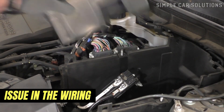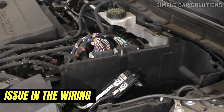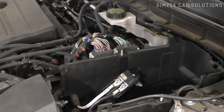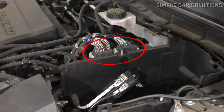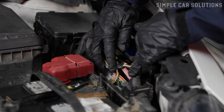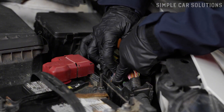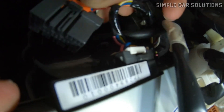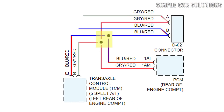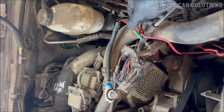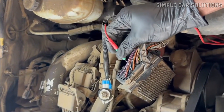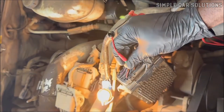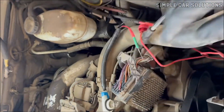The next common cause of a U0101 code is an issue in the wiring, typically an open circuit, short, or poor connection somewhere in the system. Diagnosing wiring issues can be tricky and time-consuming. To start, you'll want to locate the TCM wiring harness and disconnect it. Then, using a wiring diagram or pinout chart, identify the power, ground, and communication lines. Begin testing these circuits to confirm that power and ground are present and that the wires are properly connected with no breaks or shorts.